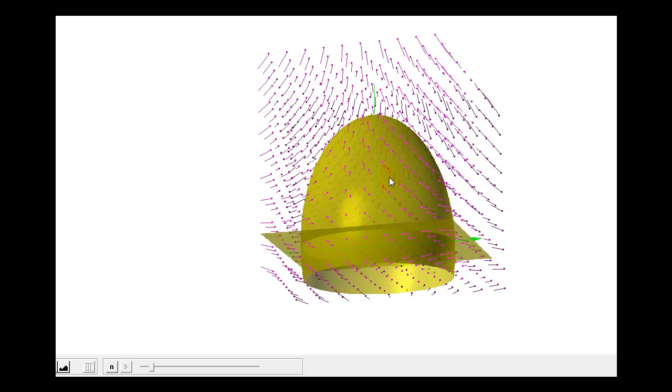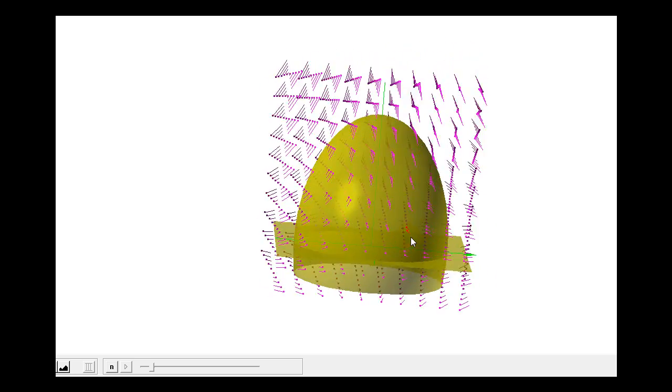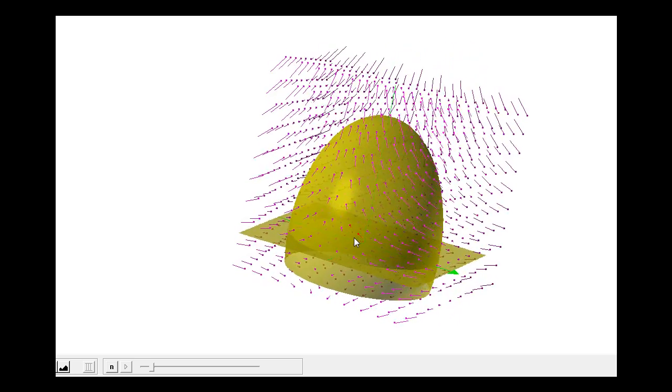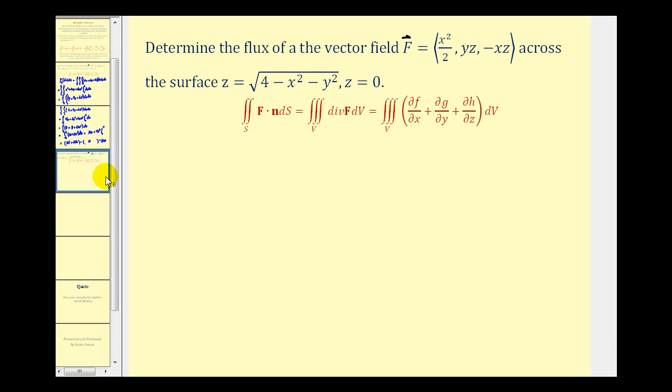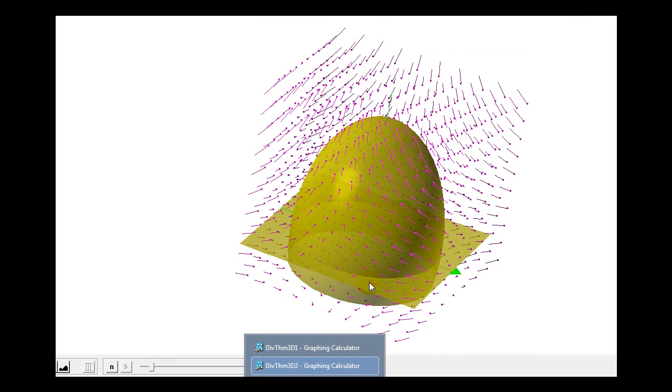Here we see our surface in yellow and our vector field in purple. If the value that we determine is positive, that means the net flow across the surface would be outward. And the total divergence of the vector field in this solid would be outward. And if it's negative, it would be inward.